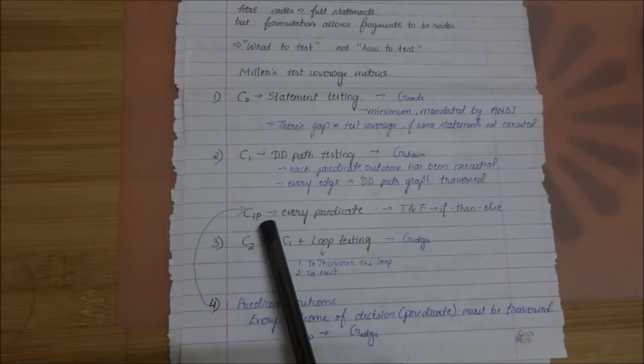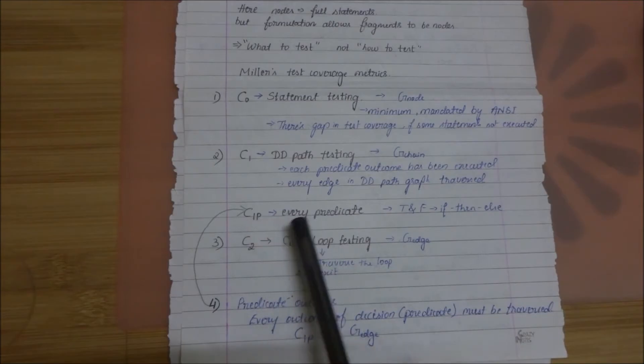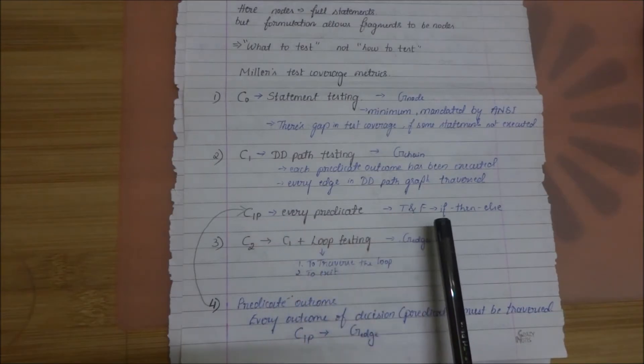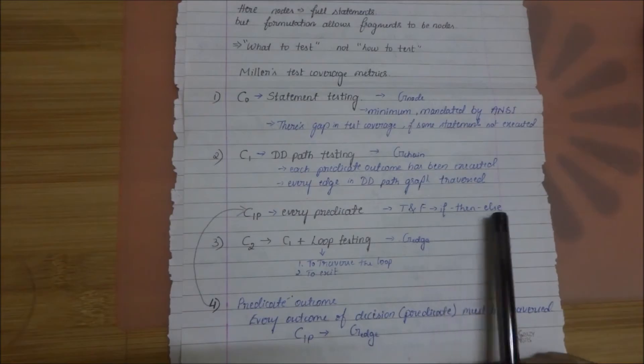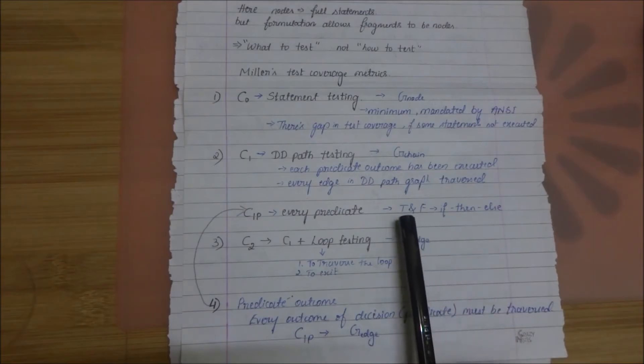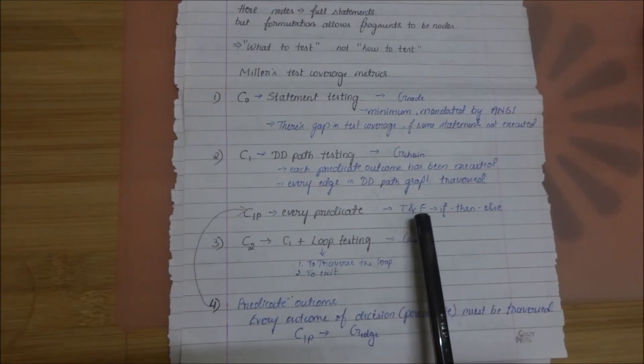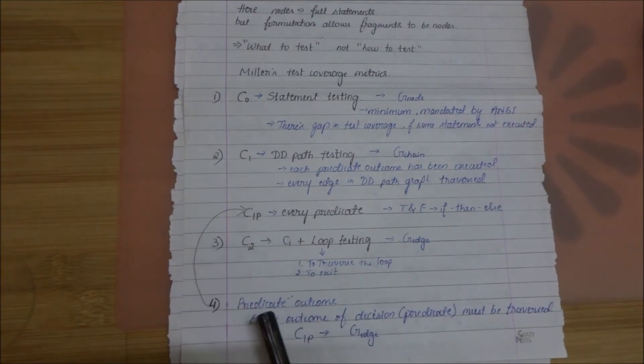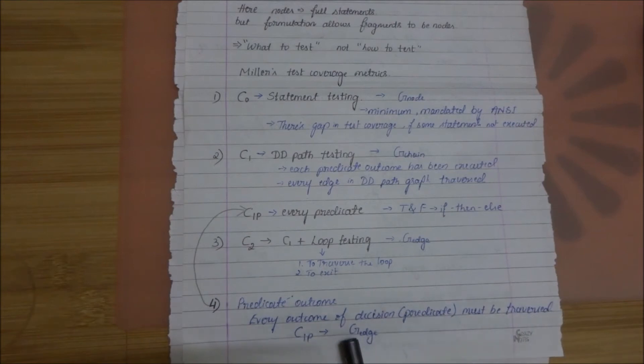And the next one is C1P. This stands for every predicate. If there is a branching statement like if-then-else then every edge true and false both are tested. It is also called as predicate outcome stating that every outcome of a decision or a predicate must be traversed. This you can compare with the G-edge of the previous approach.